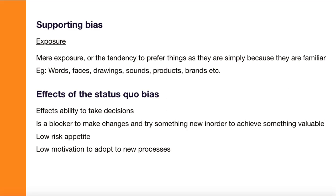While the status quo bias can seem good because you're making decisions based on past experience, there are negative aspects as well. The first is it affects the ability to make decisions. Going back to the shampoo example — if you're familiar with one shampoo and there are three unknown ones, you pick the familiar one without even looking at the other options, which could actually be more beneficial.